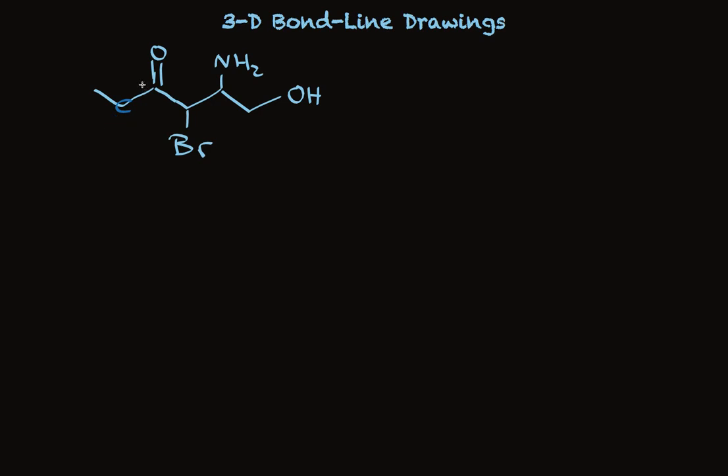There's a convention that acknowledges that when we have three atoms in a plane, this atom, the carbon, and this other carbon, that the two other things that are attached to carbon, in this case they're hydrogens, stick down. But one points away from us, and the other points toward us.